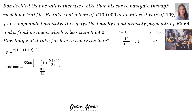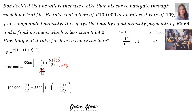We enter the present value formula. In P's place: 100,000 equals X, which is 5,500, times the bracket 1 minus bracket 1 plus I (0.1 divided by 12, because of monthly payments) to the power negative N, over 0.1 divided by 12. In the next step, I will multiply away the 0.1 over 12 on both sides, and divide away the 5,500 on both sides.